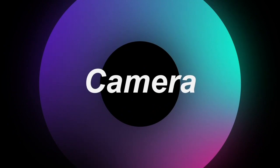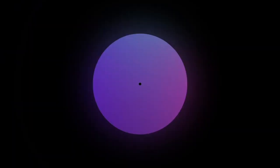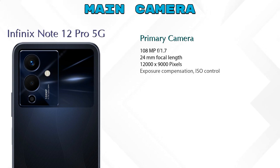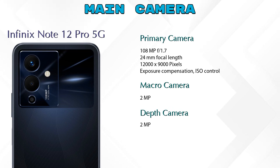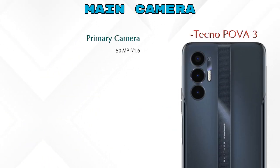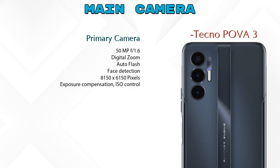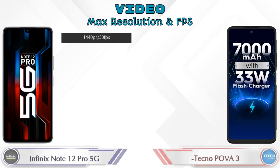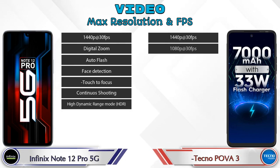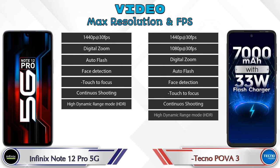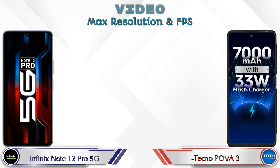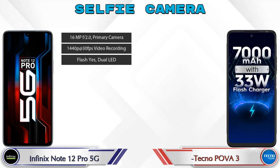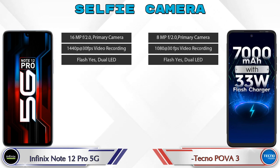Let's see the detail about cameras. For the rear camera, the Note 12 Pro 5G has three cameras: a primary camera, a macro camera, and a depth camera. For video, the Note 12 Pro 5G has 7 different feature options and the Power 3 has 8. For the front selfie camera, both phones have a single camera with three different features available.